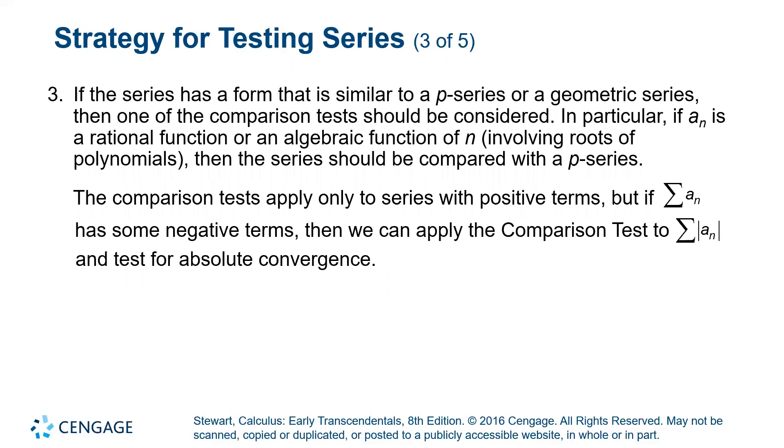If your series has a form that kind of looks like a p-series or kind of looks like a geometric series but you can't make it directly turn into one of those, then you could use a comparison test instead, comparing your series to a p-series that is similar or comparing your series to a geometric series that's similar. If you have something that has some negative terms then you could apply the comparison test specifically with the absolute value of your series to test for absolute convergence like we saw in the previous section.